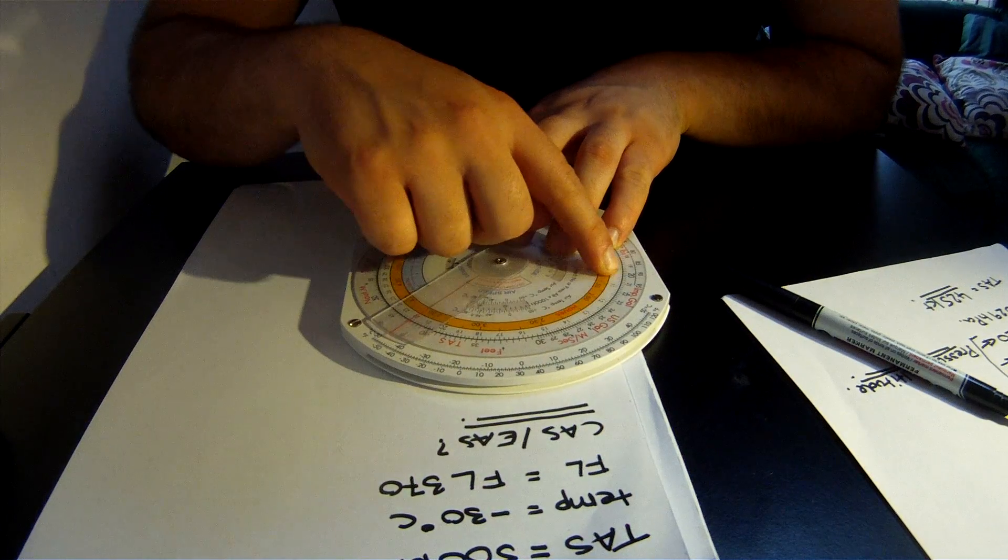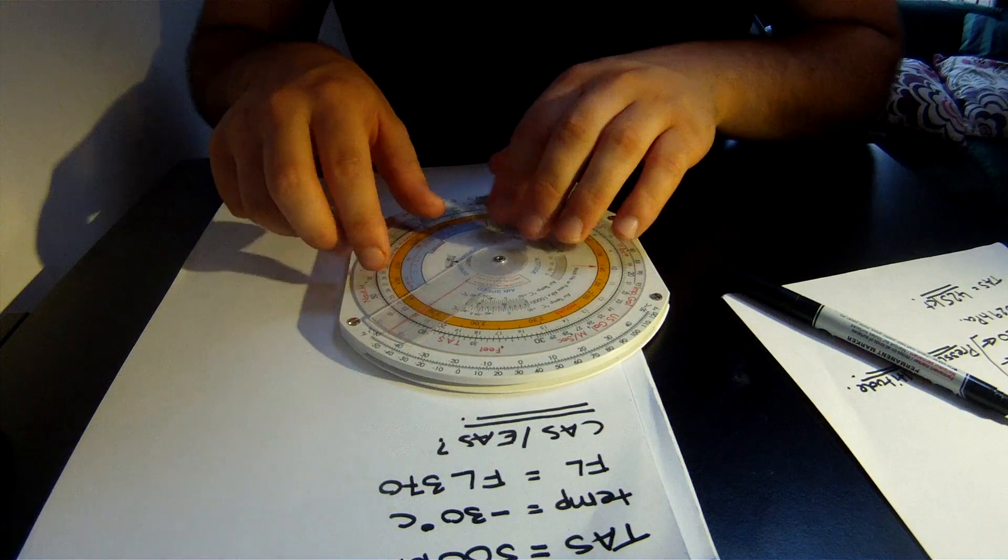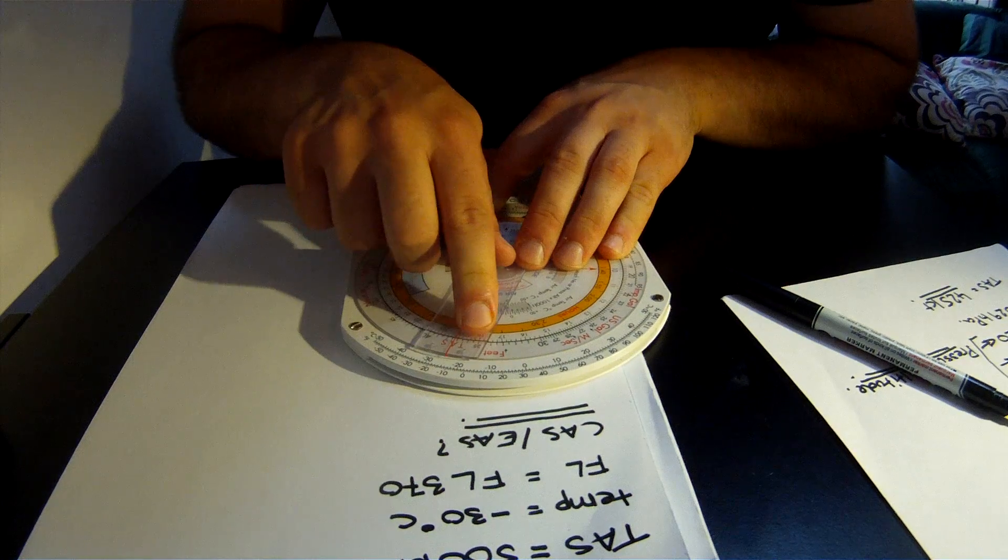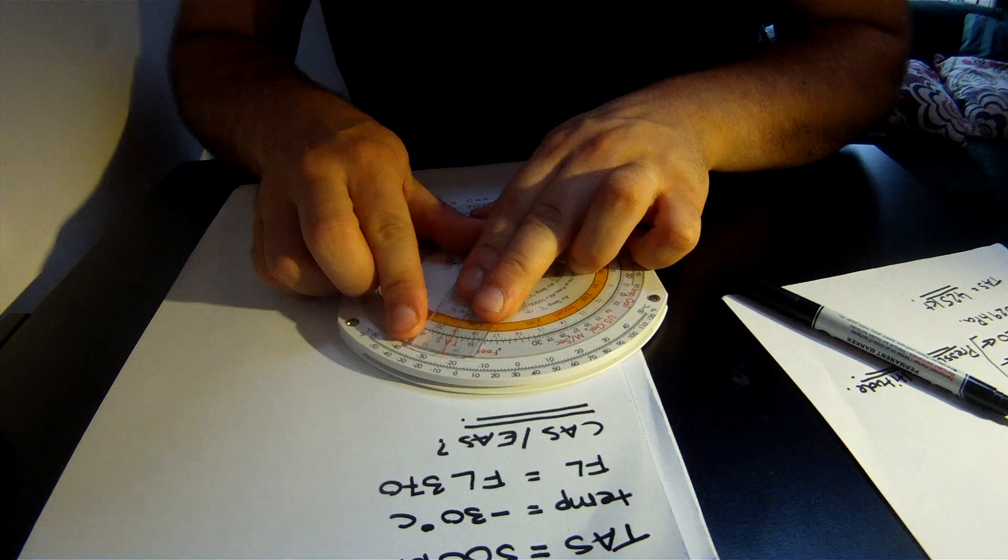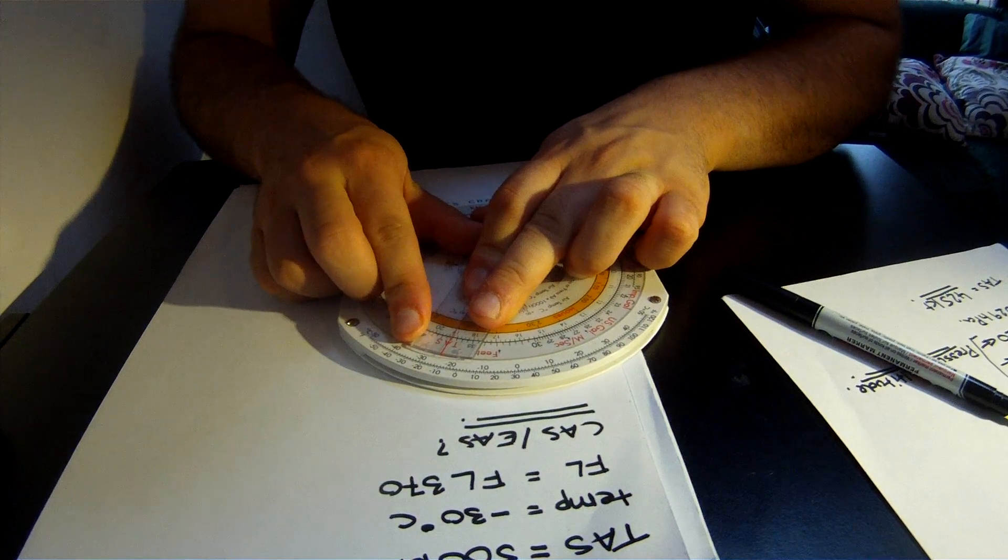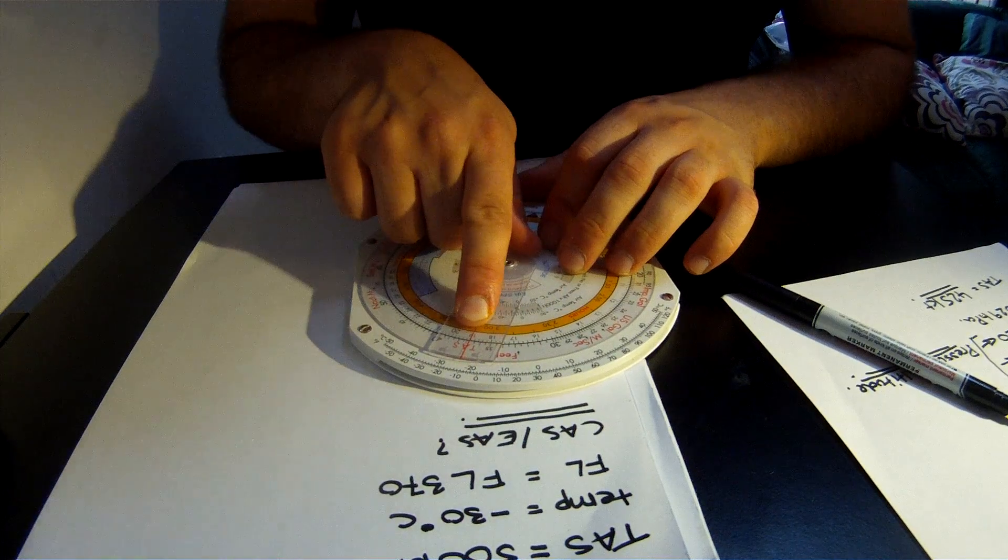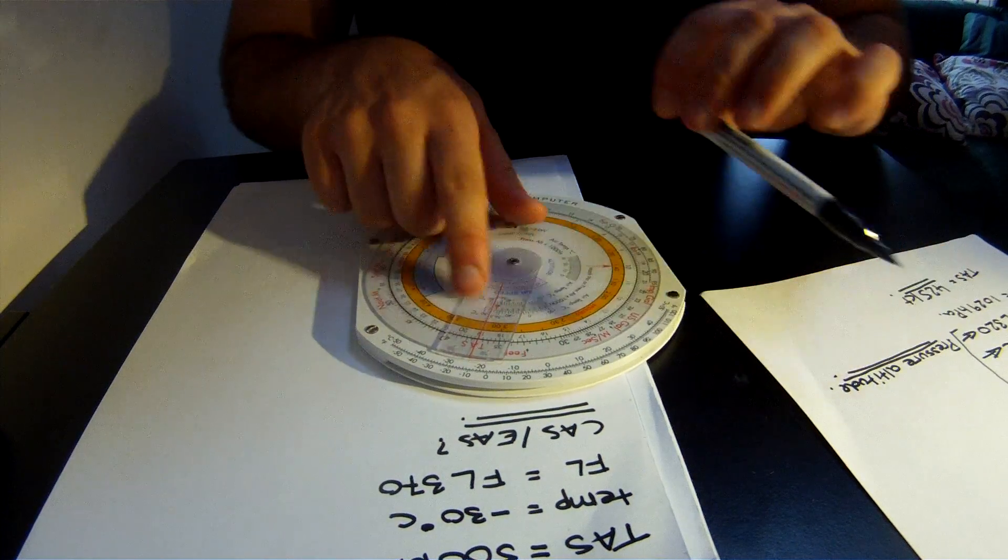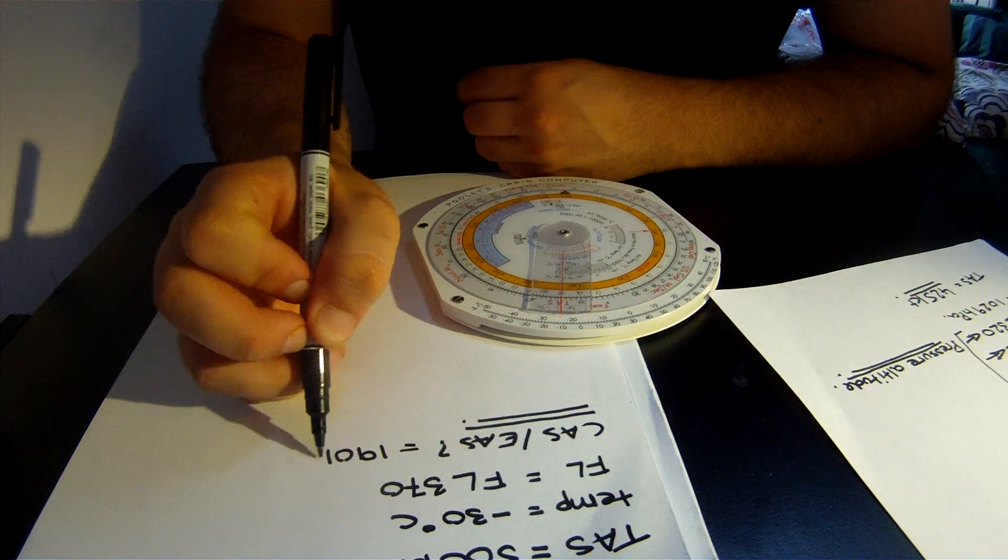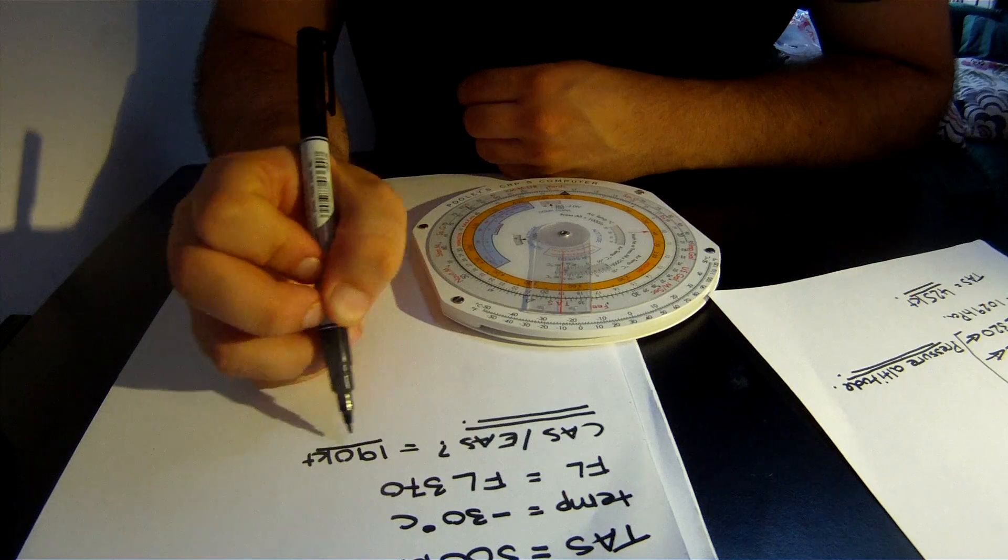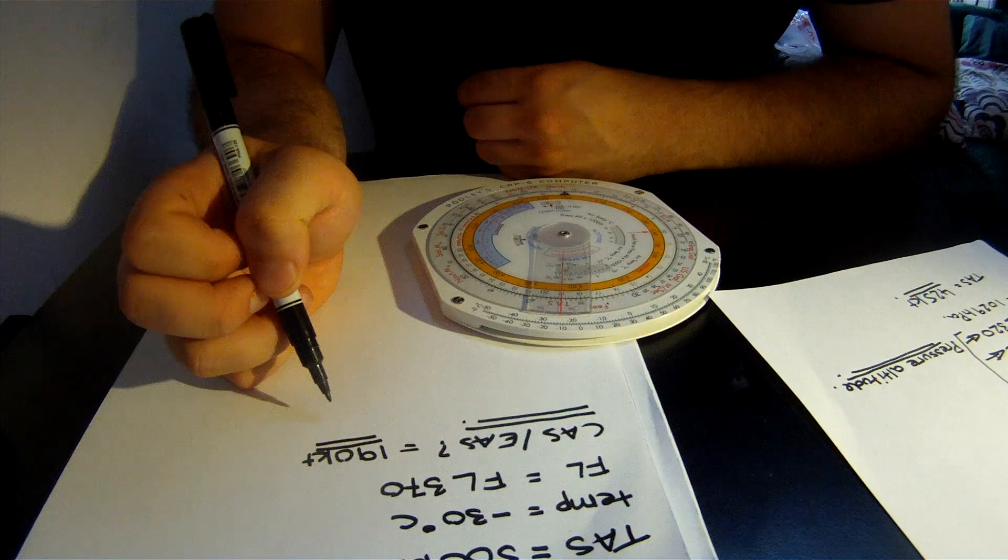Now we've got minus 30, and now what we're going to do is instead of starting on the inside scale, we're just going to start on the outside scale. 370—right on it. What you're going to get is an airspeed of 190. This equals 190 knots.